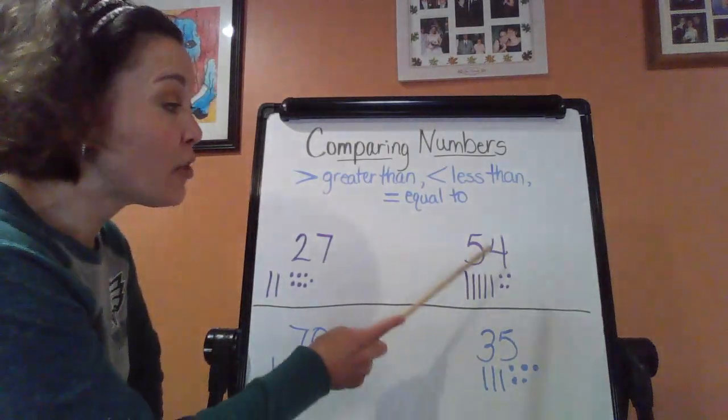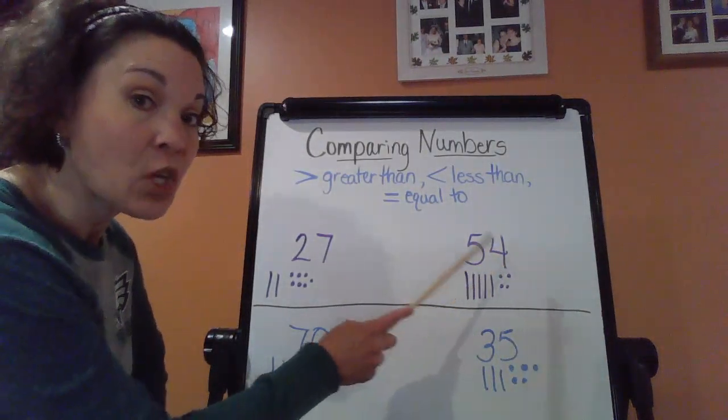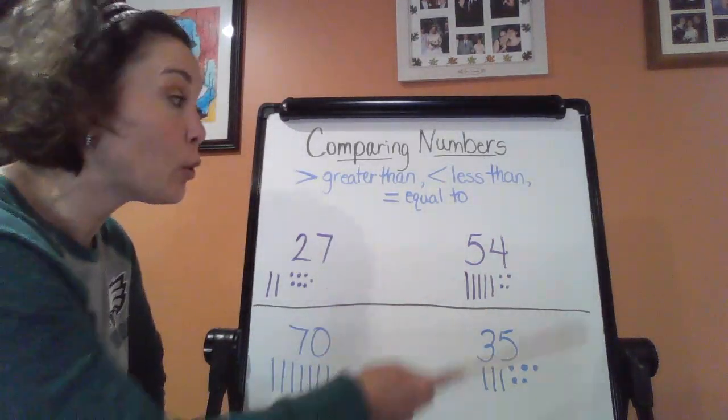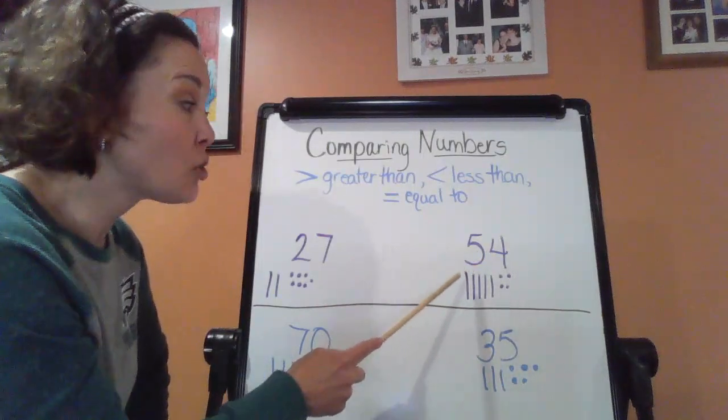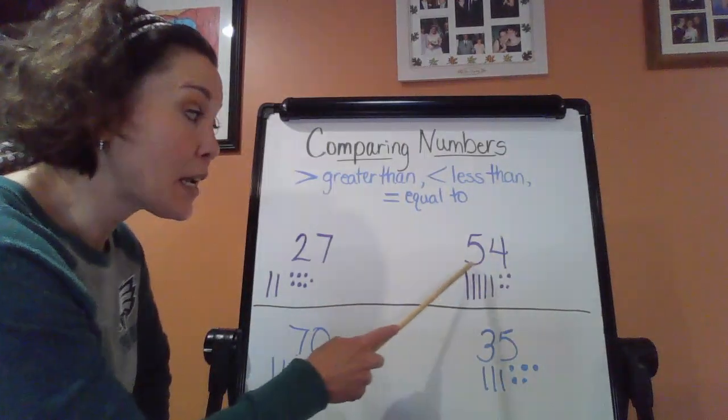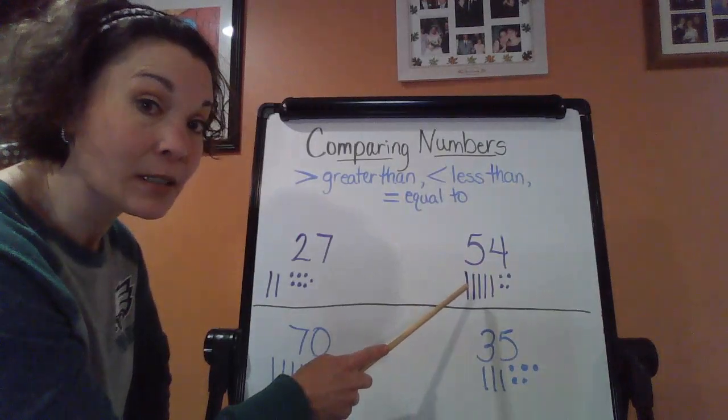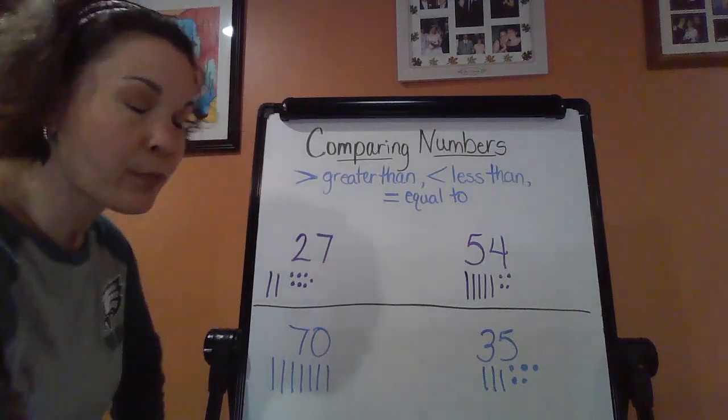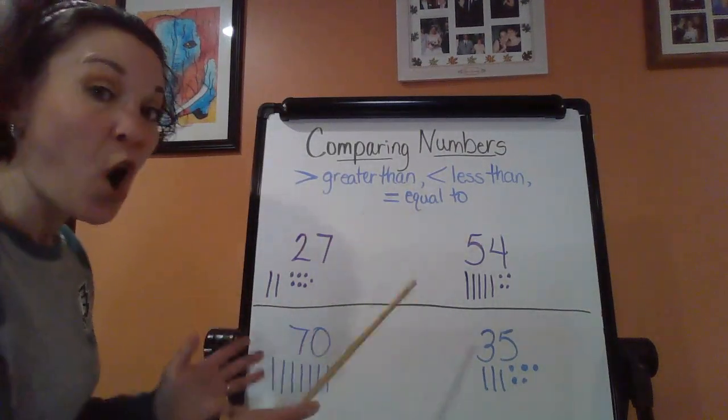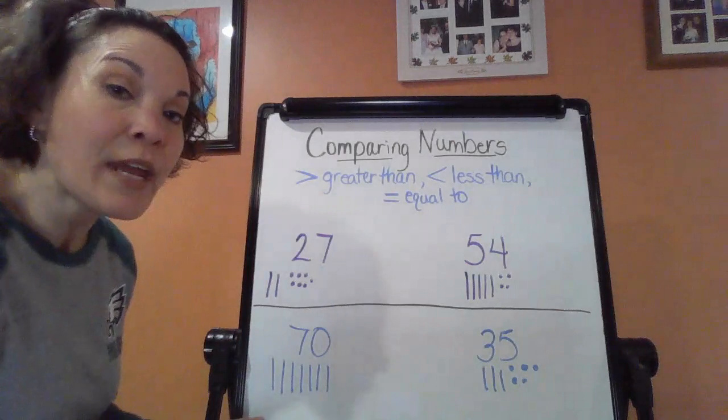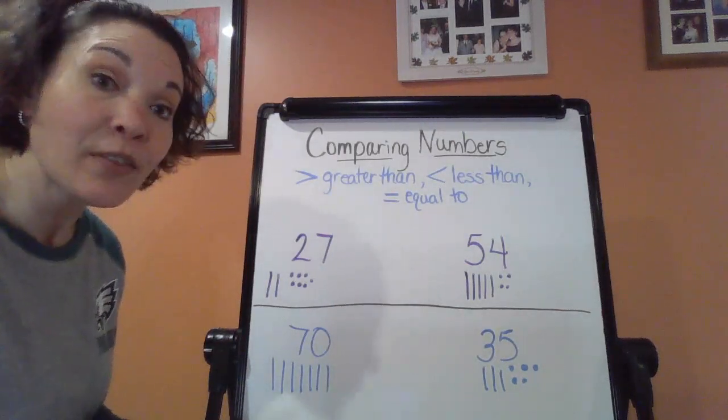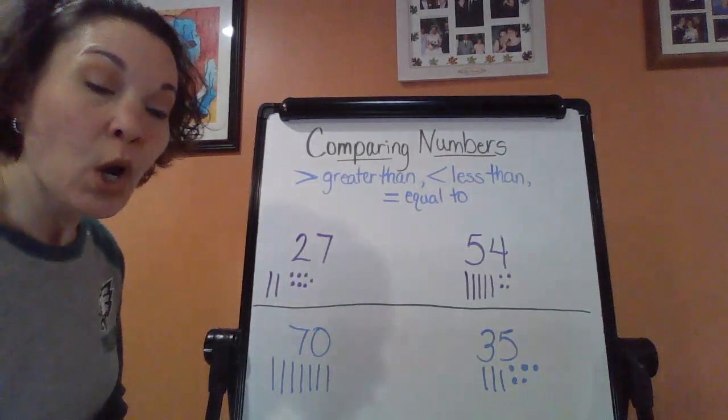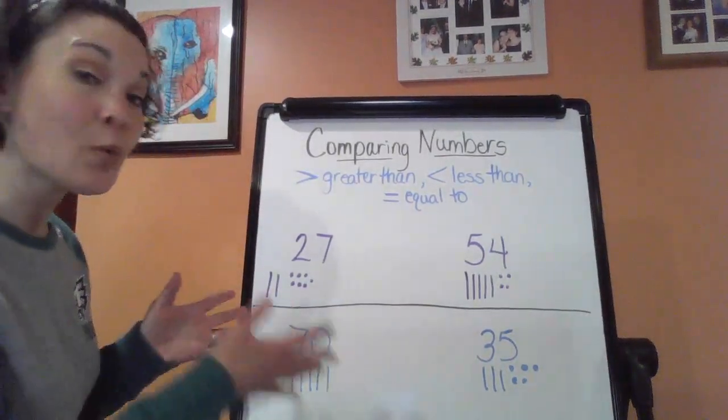Then, we have the number 54. So again, the same place will hold the biggest value is the tens place again. So now you're going to see five tens blocks to show five tens, two tens blocks to show two. So now that both of those numbers are different, you can compare them. Because you can compare things, of course, that are different.